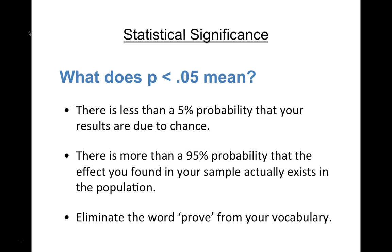Statistical significance is something statisticians and social scientists have used for a long time. There's increasingly some conversation about thinking more carefully about what p-values mean and how we interpret them. For our purposes, the minimum statistical significance threshold we accept to call something statistically significant is p < 0.05.